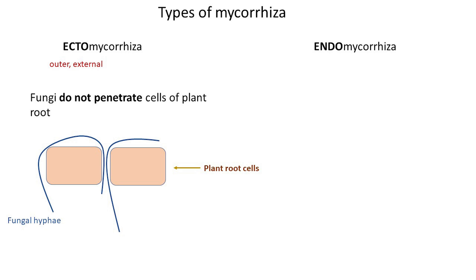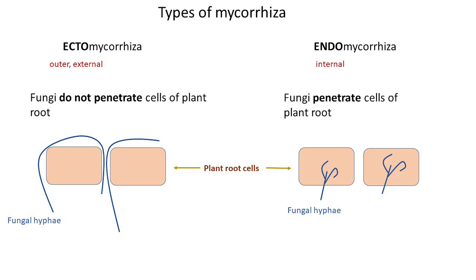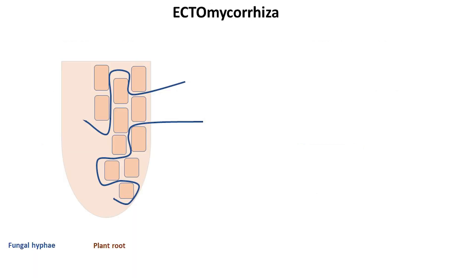There are two main types of mycorrhiza: ectomycorrhiza and endomycorrhiza. Each type has distinctive characteristics. The prefix ecto denotes external, indicating that the fungal hyphae remain outside plant cells. On the other hand, endo signifies internal — hyphae penetrate the plant root cells. So, let's talk in a bit more detail about each type of mycorrhiza.